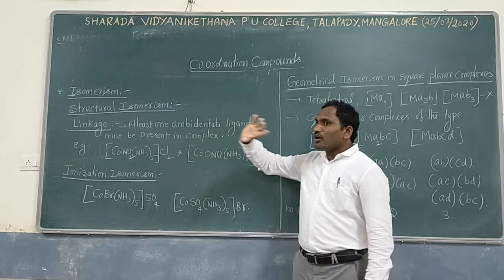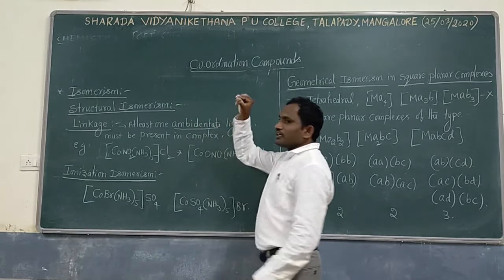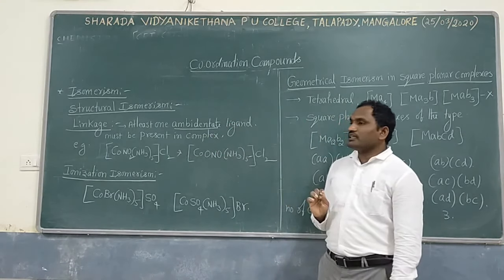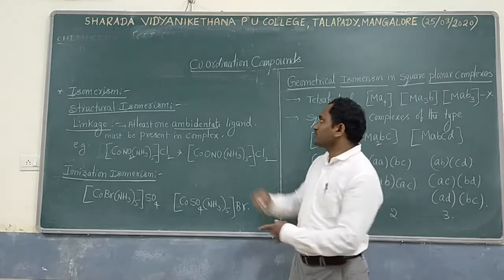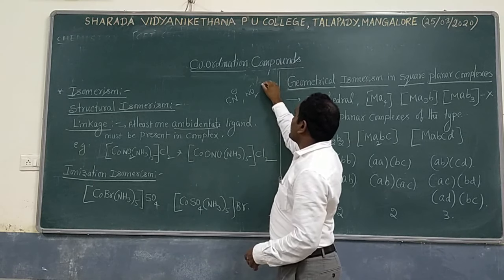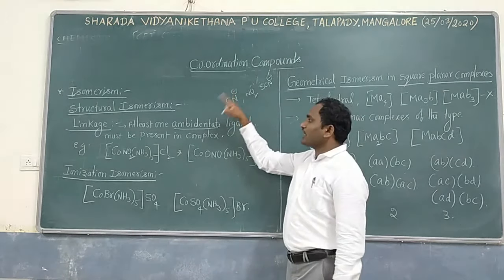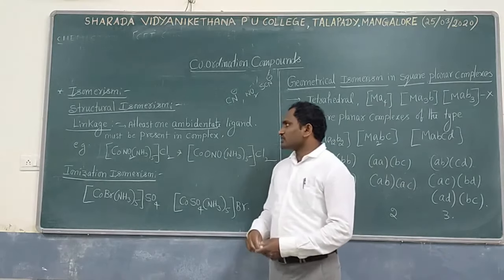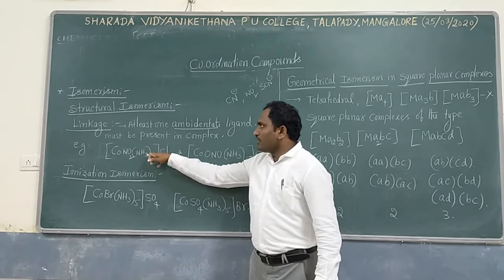Linkage isomer: which can exhibit linkage isomerism — if they ask — the first condition is it must contain an ambidentate ligand. Linkage isomerism: complex must contain an ambidentate ligand. Ambidentate ligand means a ligand which contains more than one type of donor center. Suppose CN⁻, NO2⁻, SCN⁻ — in this case, nitrogen can act as donor and carbon can act as donor, but any one only can donate a pair of electrons, any one only can act as donor center. Here NO2⁻ is the ambidentate ligand, so this is an example of linkage isomerism.